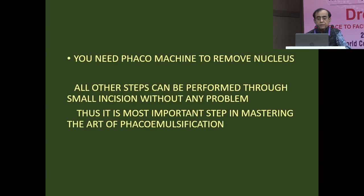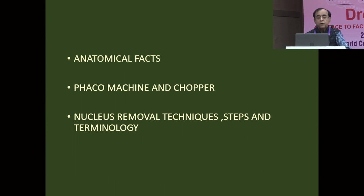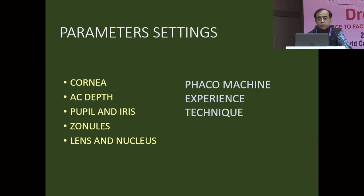Some anatomical facts we need to understand while we remove the nucleus — we need to understand something about the machine, the chopper, and certain nucleus removal techniques. The basics are the same irrespective of the situation. Parameter settings and difficulty of nucleus removal depend upon the type of the cornea, anterior chamber depth, the pupil and iris, how strong the zonules are, and how hard the nucleus is.